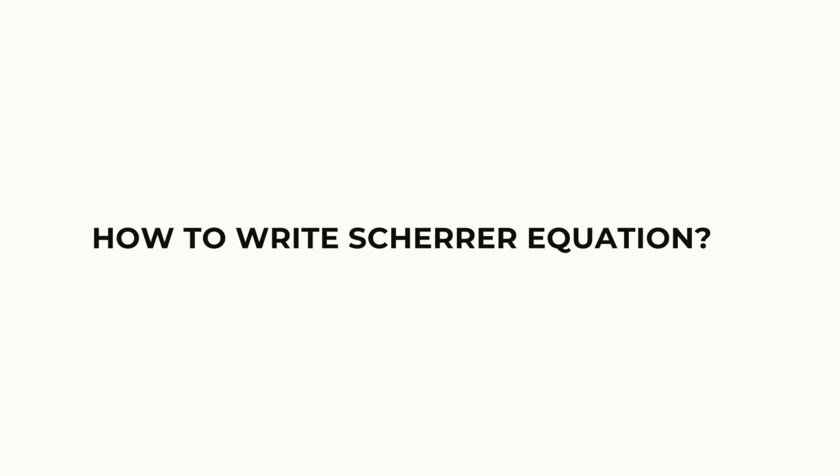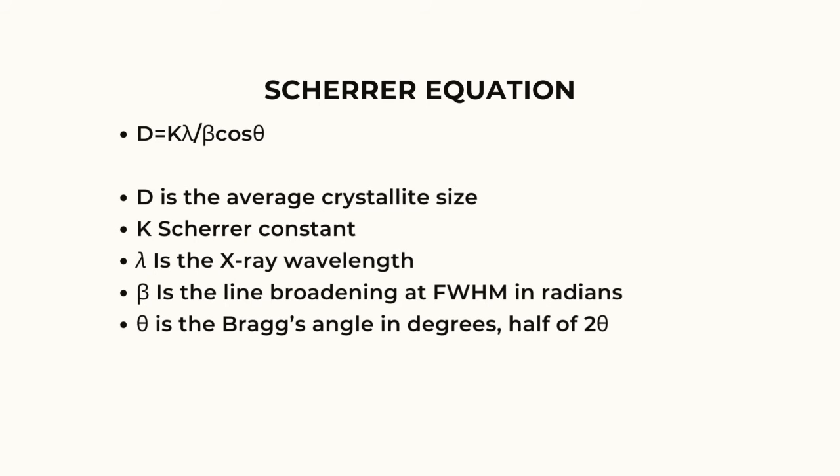How to write the formula of Scherrer Equation? The formula is D equal to K multiply with lambda, and divided by beta cos theta. D is average crystallite size, K is Scherrer constant, lambda is the X-ray wavelength, beta is the line broadening at FWHM in radians, and theta is the Bragg's angle in degrees, half of 2 theta.